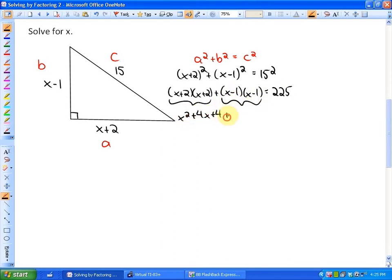If we collect all of our like terms, we'll end up with 2x squared plus 2x plus 5 is equal to 225, which is not yet in standard form equal to 0. So after we've subtracted 225, we have a standard form equal to 0 of 2x squared plus 2x minus 220 is equal to 0.